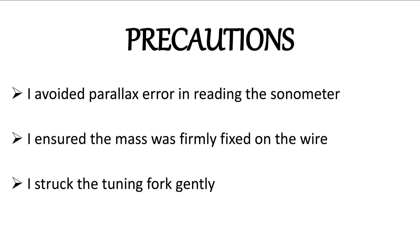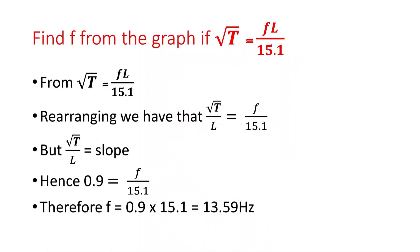After this, we are asked to deduce the frequency from the graph. If the square root of T equals F·L over 15.1, we need to rearrange this. We know that our slope is square root of T over L, so if we rearrange it such that we have square root of T over L equal to F over 15.1, then we can use the value of our slope.